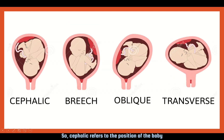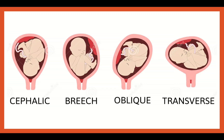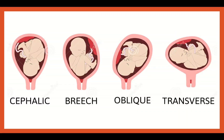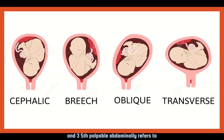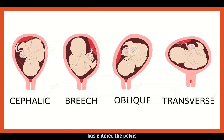Cephalic refers to the position of the baby. There are mainly four positions in which a fetus would be seen: cephalic, breech, oblique and transverse. During labour, cephalic position is seen in a fetus. And 3 fifths palpable abdominally refers to how much percent of the head of the fetus has entered the pelvis.